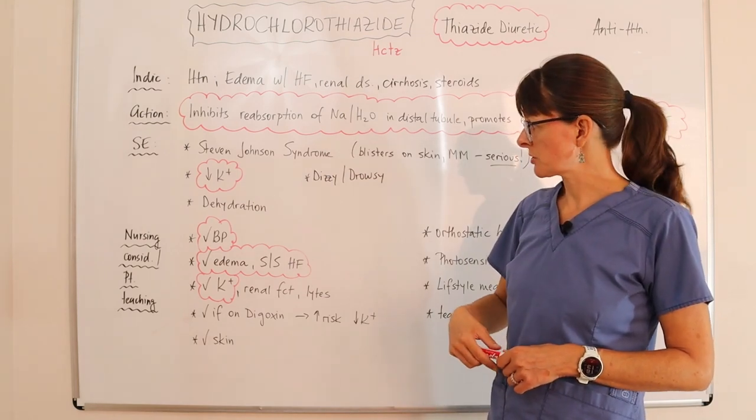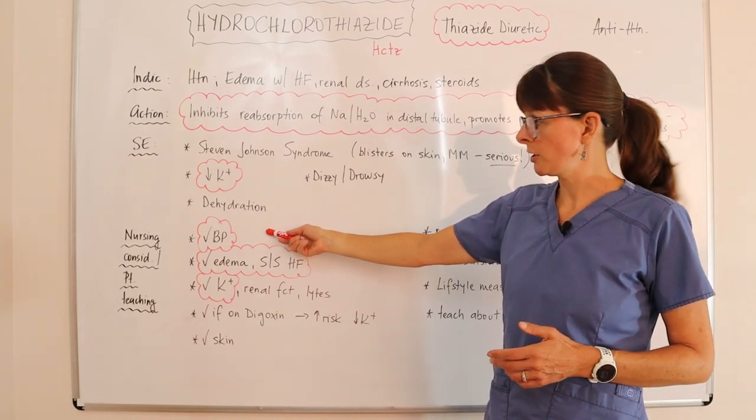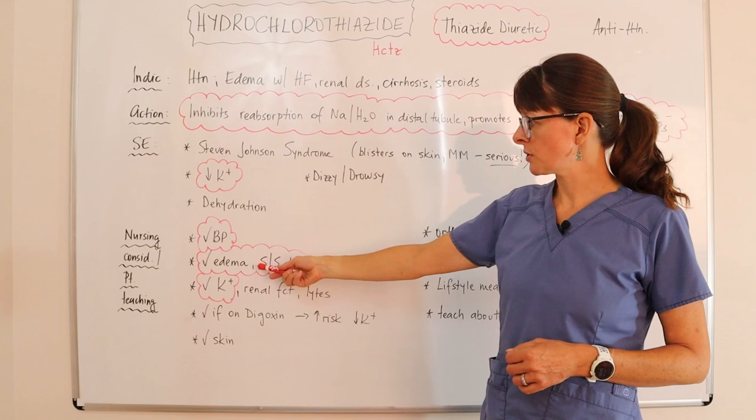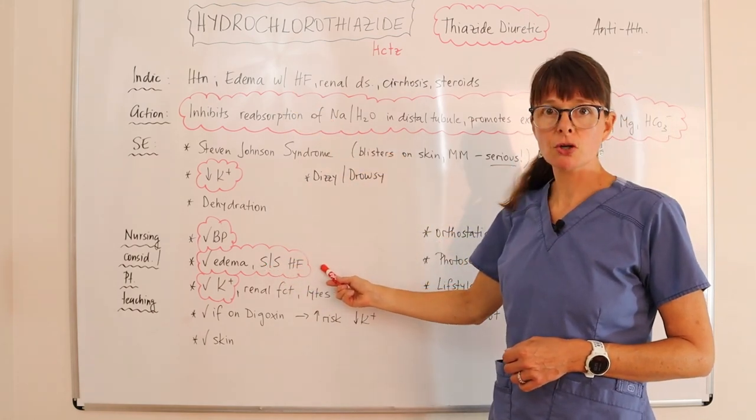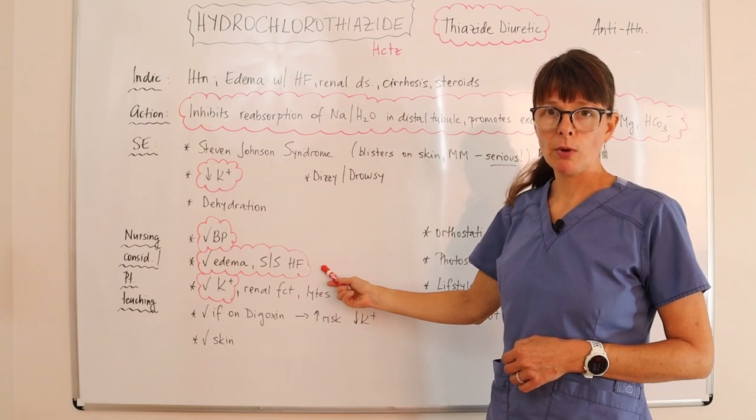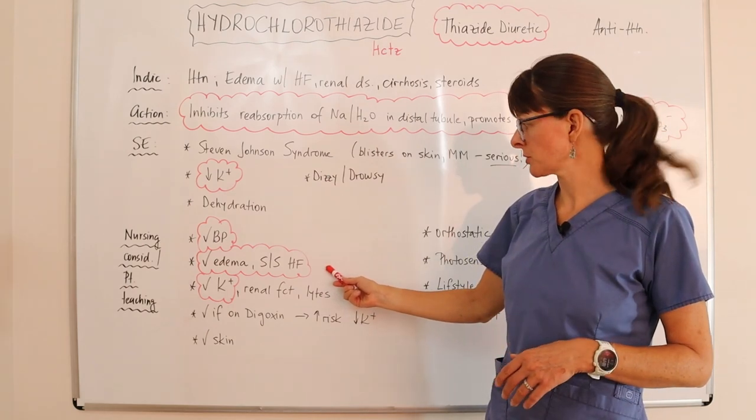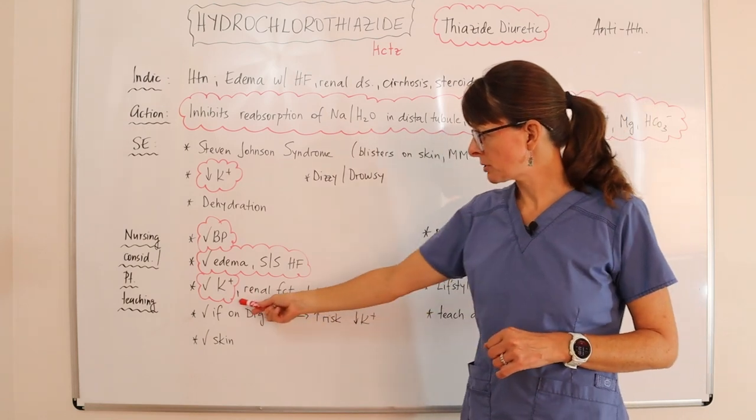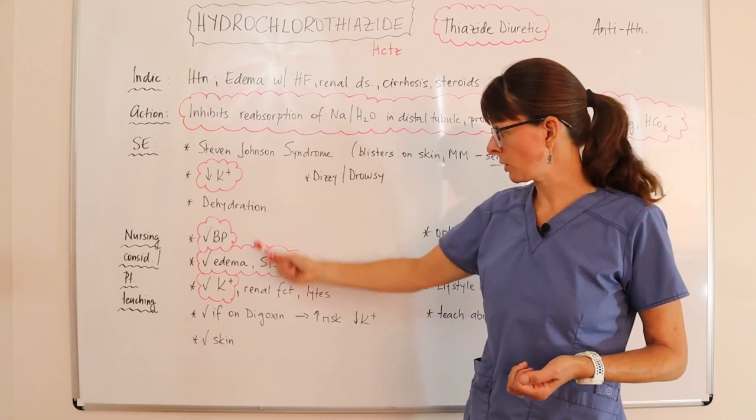Nursing considerations and patient teaching: we want to make sure we check the blood pressure before we give the medication. Check the patient for signs of edema and heart failure. So monitor I and O's, daily weight, as well as the output that they have after we administer the medication. Check the potassium level before we give it because we know it can cause hypokalemia.